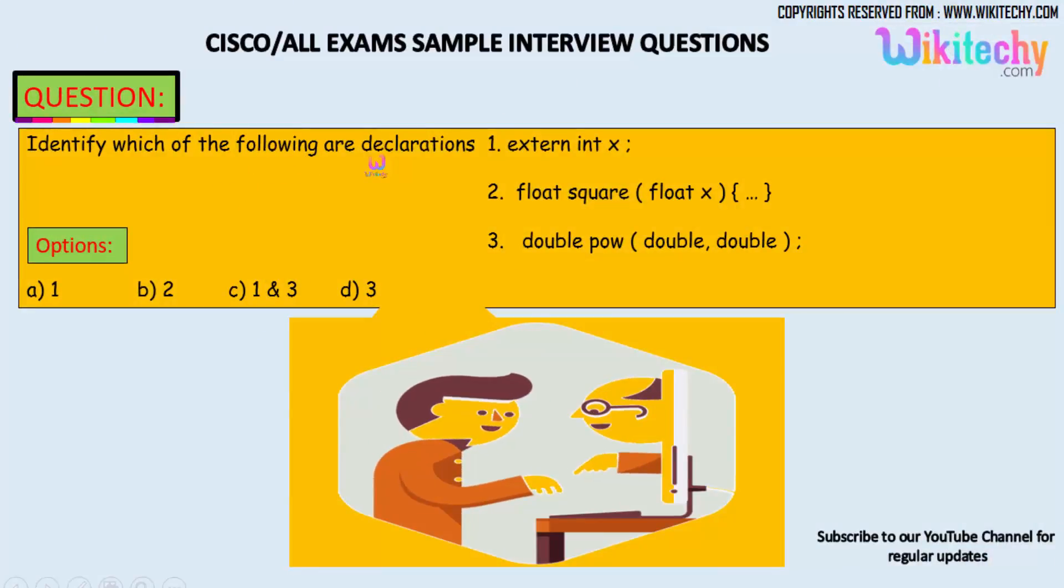which of the following are declarations: extern int x, float square of float x, and double pow (power) double double.